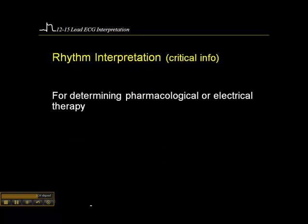When it comes to rhythm interpretation, this is critically important for determining whether an intervention is required — such as a pharmacological intervention like administration of an antiarrhythmic, or if electrical therapy is required for a patient who has a heart rate that's too fast or too slow, requiring either cardioversion or external cardiac pacing.